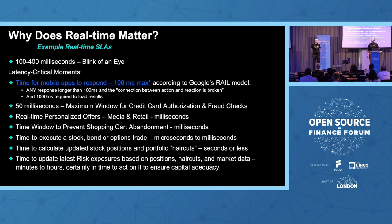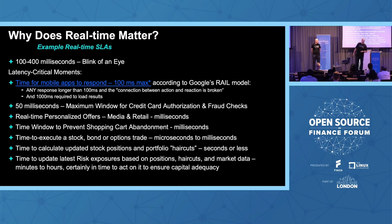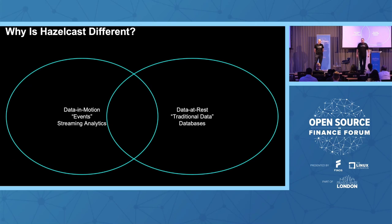I'm going to hit on the Google RAIL model: Google studied people's expectations for applications extensively and found that when people click on something, they expect a response within 100 milliseconds — that says yes, my app saw me click and it's doing something. Within 1,000 milliseconds or one second, they expect that data is starting to load. If any of those things don't happen, they think the app is broken or the network is down. That means latency is the same as downtime.